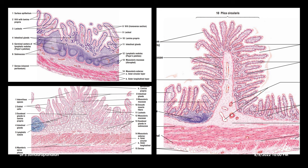If you see the jejunum slide, the submucosa has no glands — that is how we differentiate jejunum from duodenum. For ileum, you can clearly make out lymphatic nodules in the lamina propria — that is the striking feature. In the remaining layers, muscularis externa and serosa, the features are the same across all three. That is how we differentiate duodenum, jejunum, and ileum.